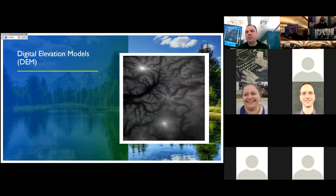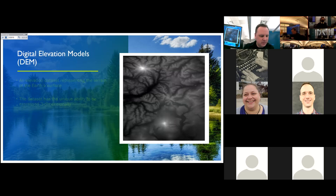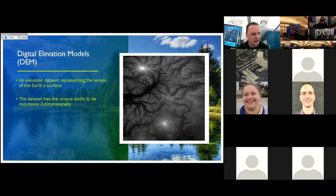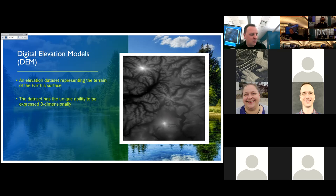In today's workshop, we'll be focusing on one particular type of GIS data utilized to create 3D topographic models. This is known as digital elevation models, or DEM, as you'll hear me refer to it throughout this workshop. A DEM is a dataset containing elevation data representing the surface or terrain of the earth, with the unique ability to be expressed three-dimensionally when the appropriate tools and procedures are applied. The level of detail can vary depending on the resources you acquire from. I'd like to introduce you to a free, openly available resource for acquiring high-quality DEM datasets.